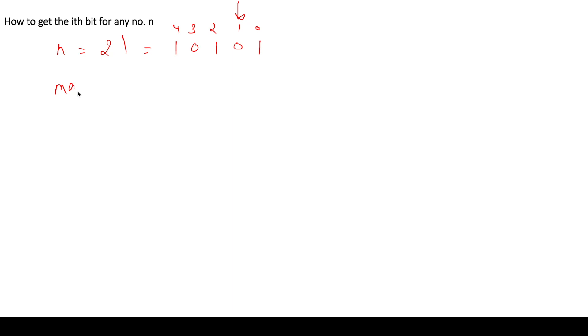So this mask value is actually 1 left shift i. This i stands for the ith bit. So in case I have to check for this 1th bit, this will be equals to 1 left shift 1, which is equals to 1 0. So let us take an AND of n and mask.